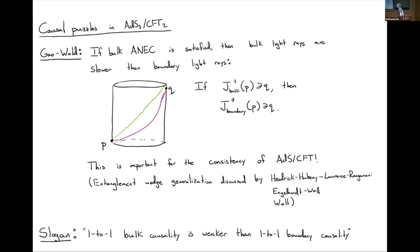Let's start by talking about causality in AdS/CFT. The fundamental theorem in this field is what's called the Gao-Wald theorem, which says that if you satisfy the bulk average null energy condition, then bulk light rays are slower than boundary light rays. To formally state this theorem, it's useful to use the notation where J+ of some set denotes the causal future of that set. The Gao-Wald theorem says that if p and q are boundary points and the bulk future of p contains q, then the boundary future of p must also contain q.